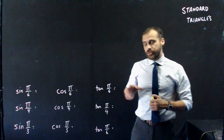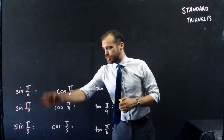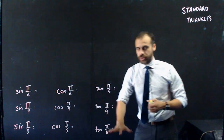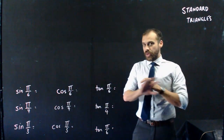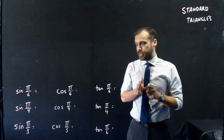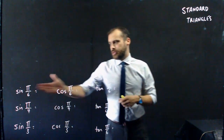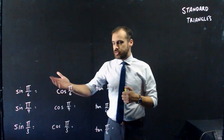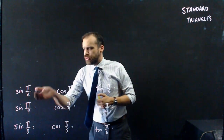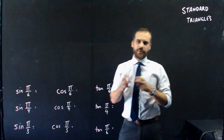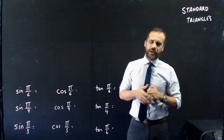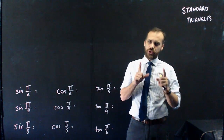By the end of this video, you'll be able to answer all of these questions without picking up a calculator. Sine pi on 6 — that's sine 30 degrees. In the past, you would have had to pick up a calculator for that. Not anymore.